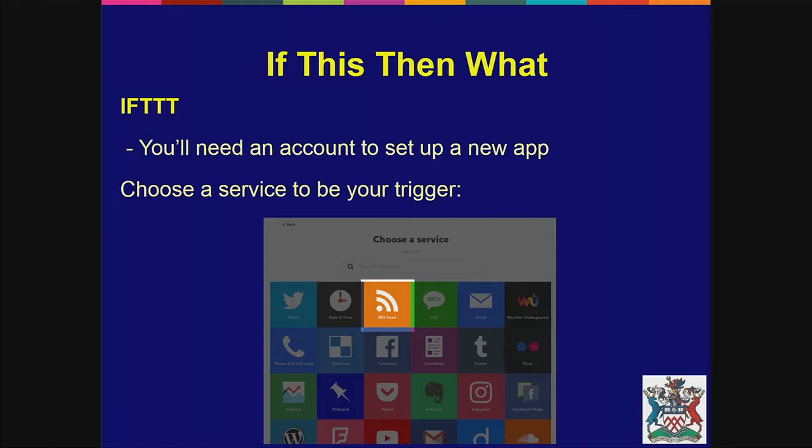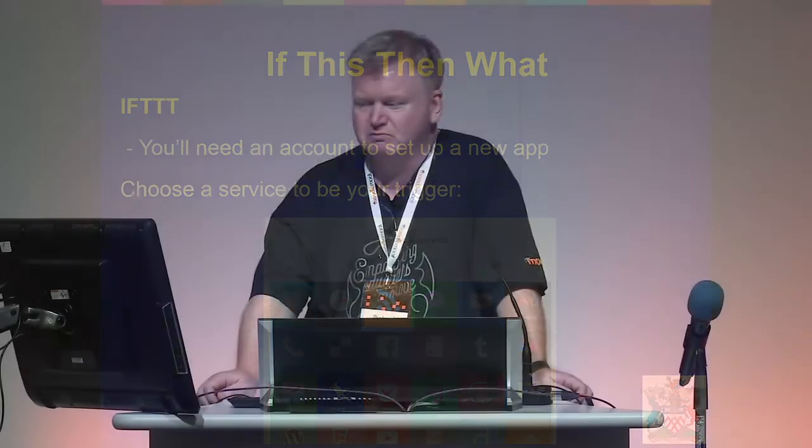If you're using an external service, you need an account on it. I already had an If This Then That account — I was playing with it with my daughter over Christmas. You then choose from multiple services as your trigger: Twitter, particular dates and times, RSS feeds — which is the one I use — SMS messages, email, Weather Underground, phone calls, Facebook, Flickr, Evernote. The list goes on and is quite extensive if you go on their website.